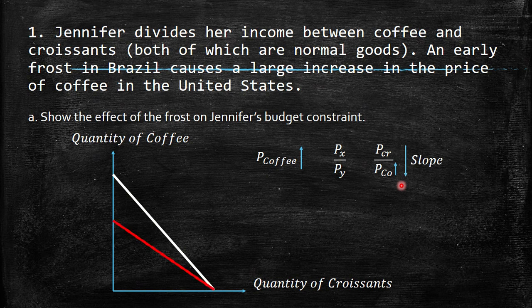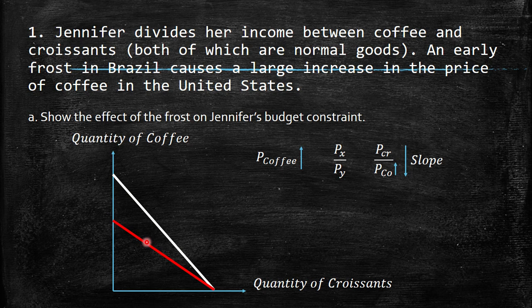Here should be the new situation. Why are we changing the coffee intercept in another direction? Because with coffee more expensive, you cannot afford the same quantity. If you spend all your income available, you will consume less coffee. For croissant, it's exactly the same because the price doesn't change. So this is the new situation of the budget constraint, and naturally a lot of bundles are no longer possible to consume due to this change.